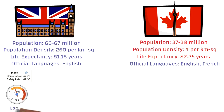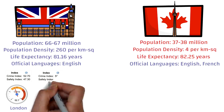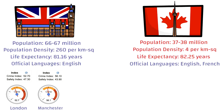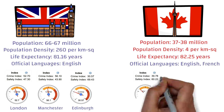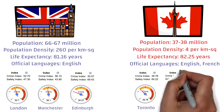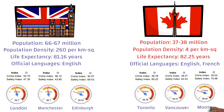Now let's look at the crime and safety index. For London, the crime index is 52; for Manchester it's 56; and for Edinburgh it's around 30 — making Edinburgh the safest of the UK cities listed. For Canadian cities: Toronto's crime index is close to 40, Vancouver's is close to 36, and Montreal's is only 29. So out of all six cities, Montreal is the safest. Overall, comparing UK cities to Canadian cities, Canada appears to be much safer.